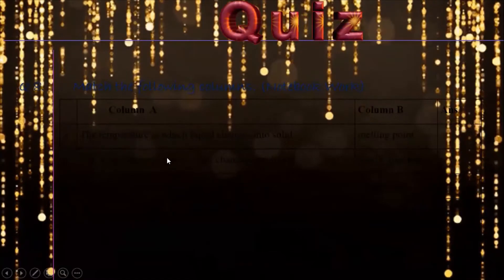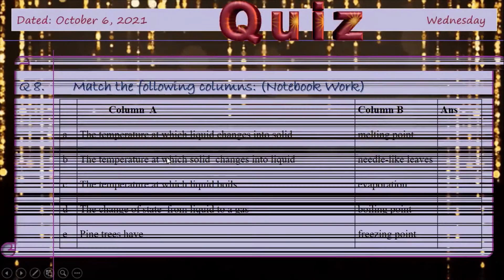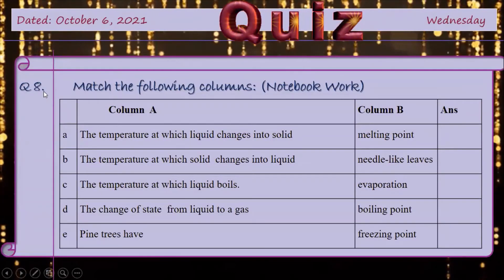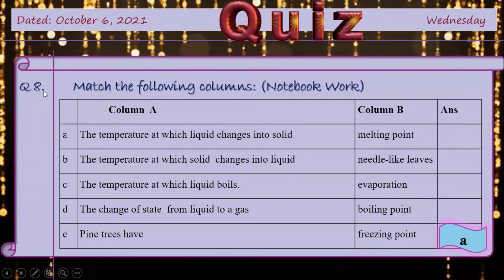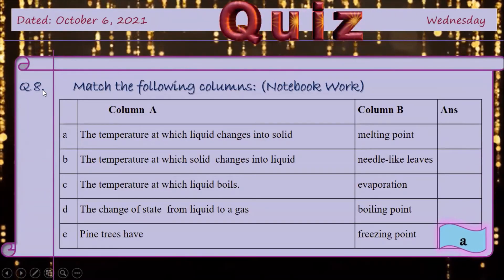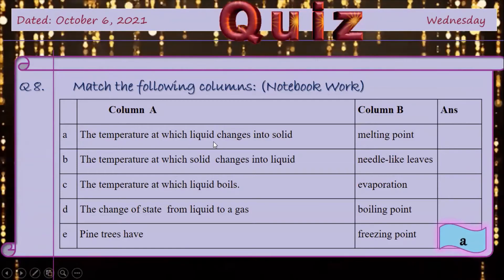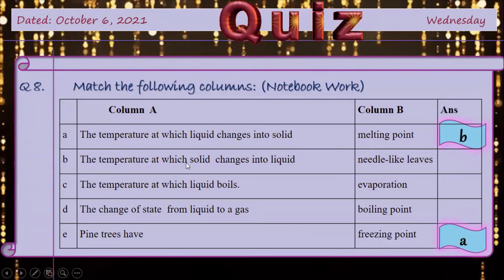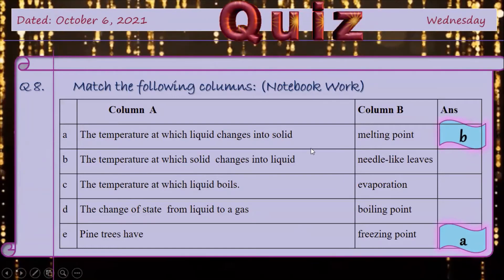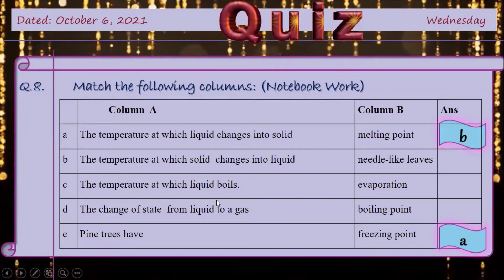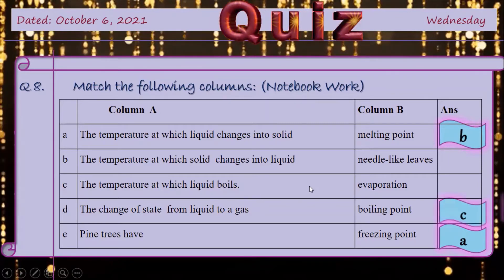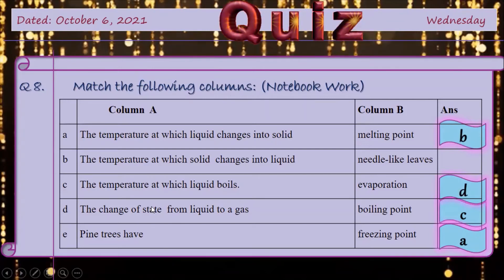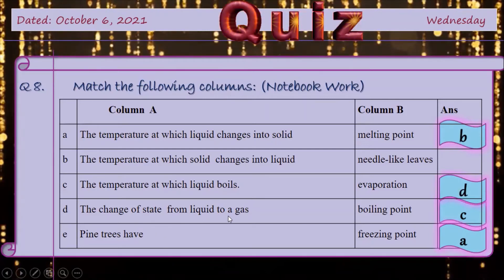Now quiz time students. Match the following columns. The temperature at which liquid changes into solid is freezing point. Temperature at which solid changes into liquid is melting point. The temperature at which liquid boils is boiling point. The change of state from liquid to gas is evaporation.